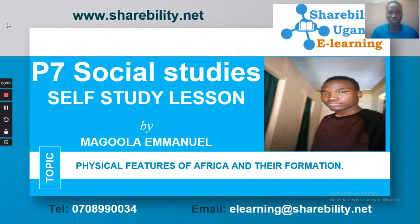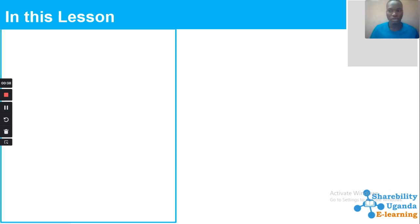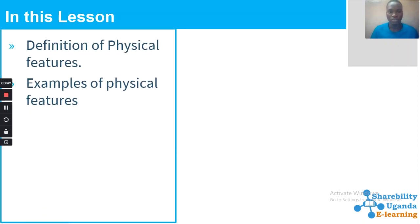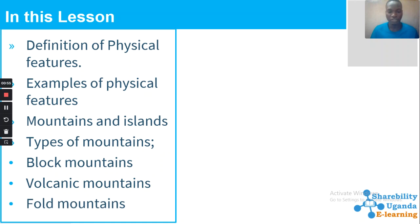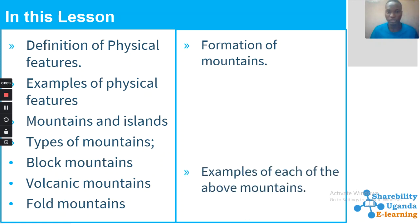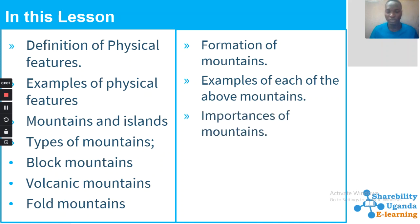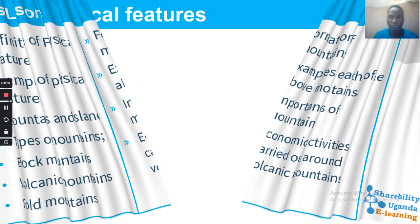Today in this lesson we are going to look at physical features of Africa and their formation — how physical features like mountains are formed and the results of their formation. We will look at the definition of a physical feature, examples found in East Africa, mountains and islands, types of mountains including block mountains, volcanic mountains, fold mountains, their formation, examples of each, the importance of mountains, and economic activity carried out around volcanic mountains.